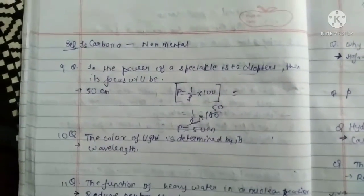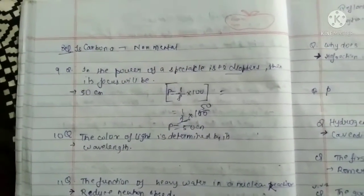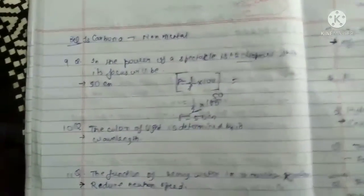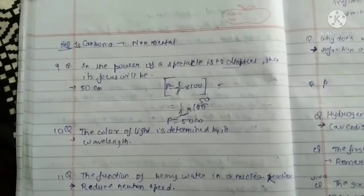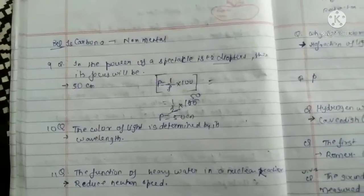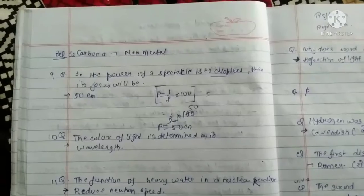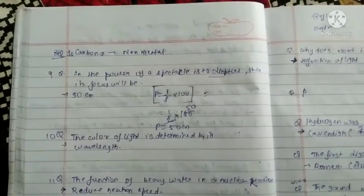Carbon is non-metal. Ninth, the power of spectacles is two diopters. Then the focal length will be. The focal length is equal to 1 by f into 100, 1 by 2 into 100. The answer is 50 centimeter.